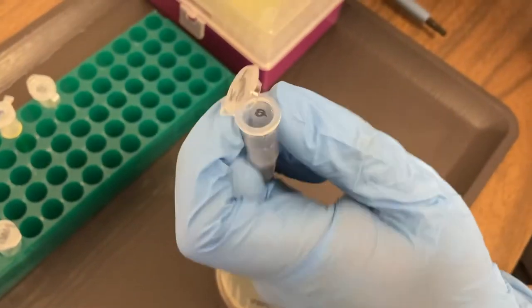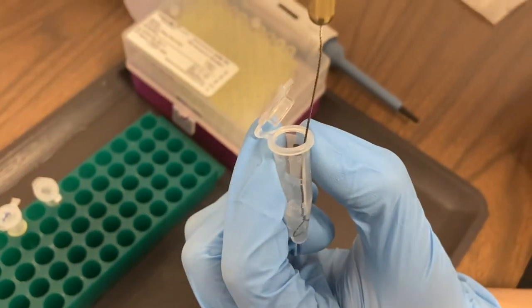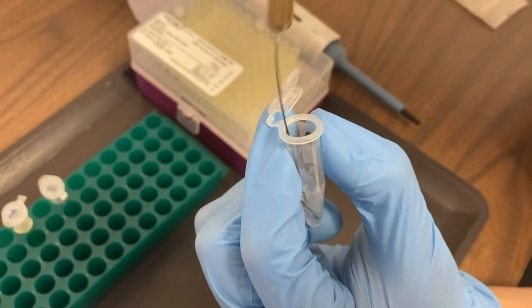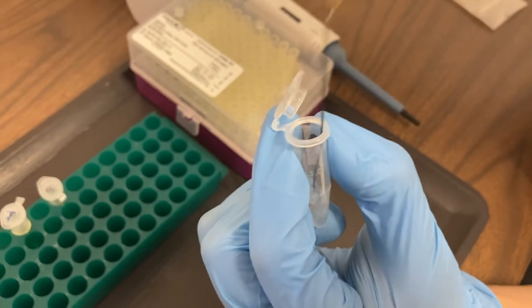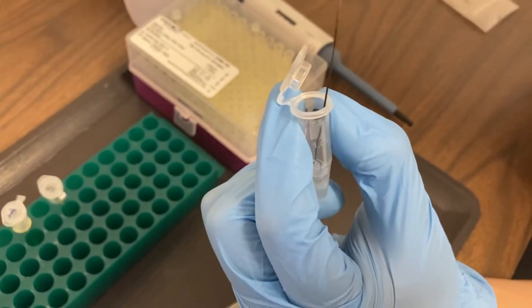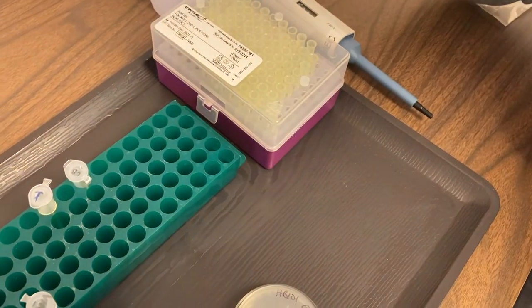We're going to put this in a tube labeled plus DNA. Now inside of this tube is calcium chloride. We're going to stab and twizzle and make sure we get the bacteria off of the loop and into the calcium chloride.